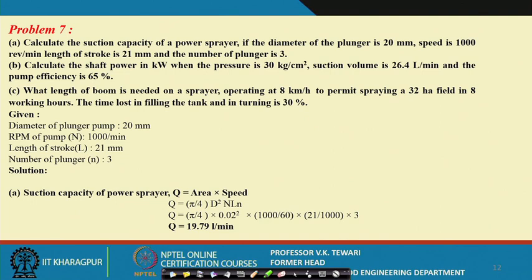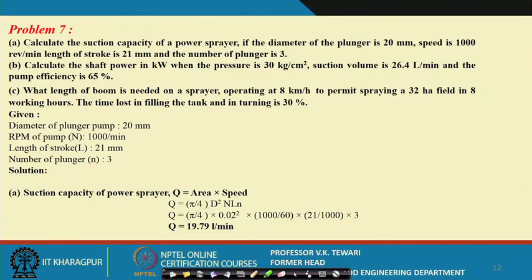For suction capacity: the area of the plunger is π d² by 4, and the stroke speed can be determined from the given rpm and stroke length. Multiplying area by speed by number of plungers gives the volume rate — that is the suction capacity, the volume of liquid sucked per unit time. You directly multiply these values to get the suction capacity.